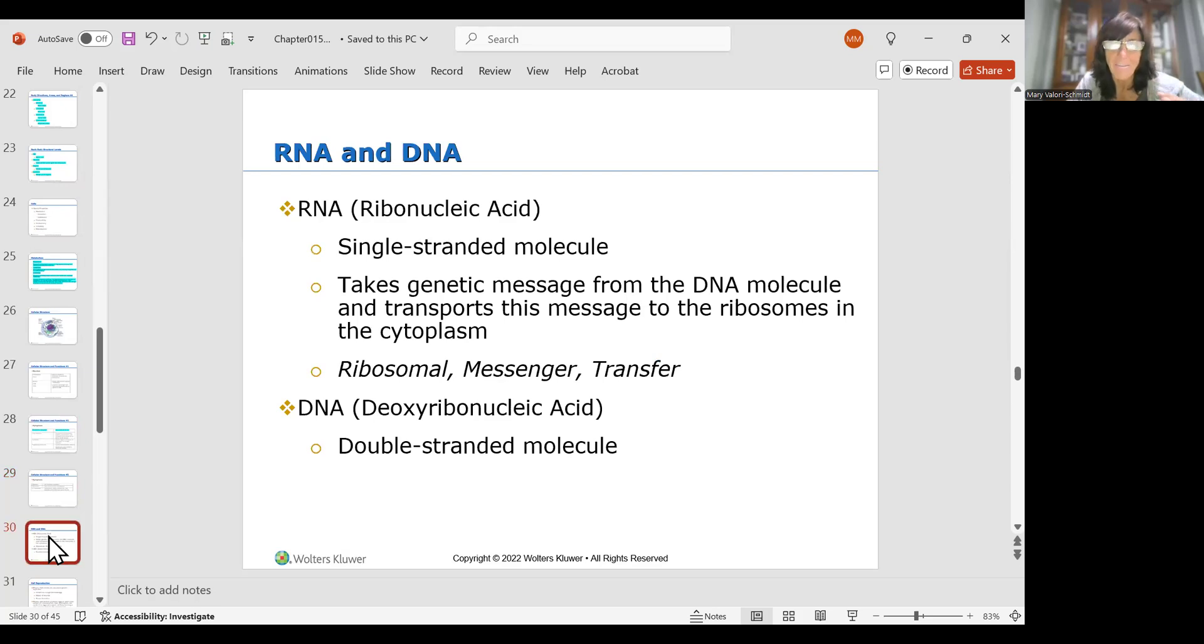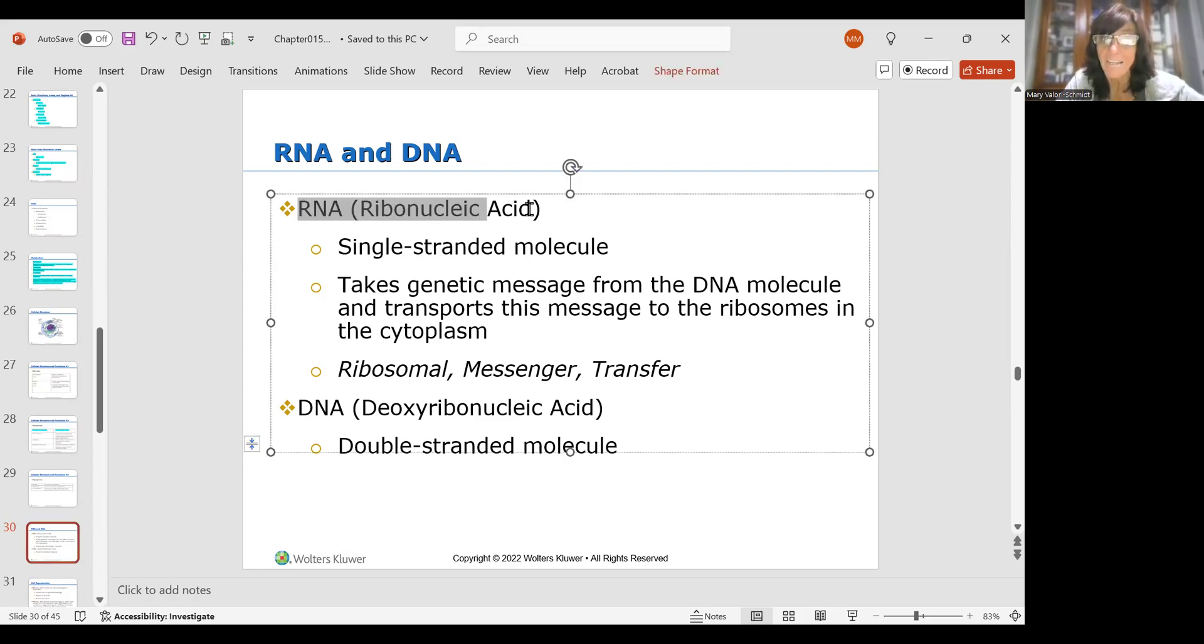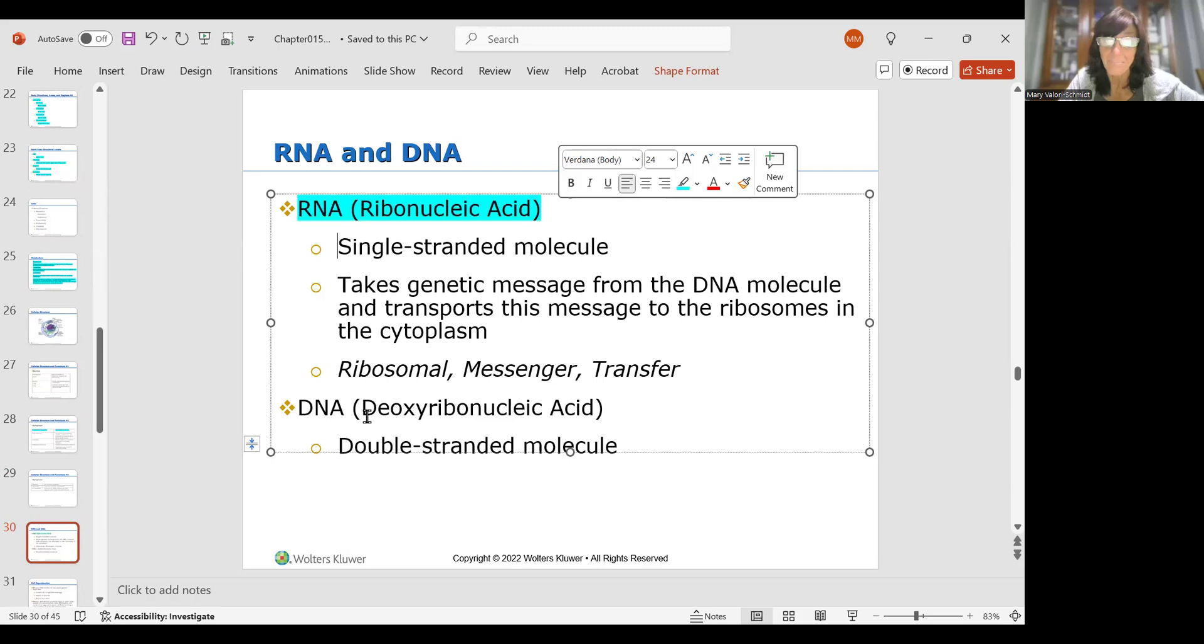Just to kind of go over RNA and DNA. So RNA is ribonucleic acid and it's only got one strand. DNA is deoxyribonucleic acid, it's two strands. The RNA takes the message from the DNA and transports it to the little ribosomes in the cytoplasm of the cell. So it's all about transferring the message. Like here, this is who we're building, we're building this Mary or anybody else. So the RNA tells us how to build it and the DNA is what builds it. I guess that's an easy way to explain it.